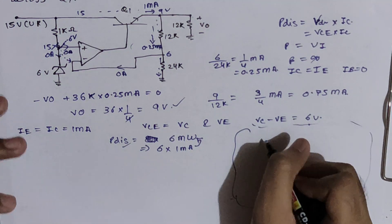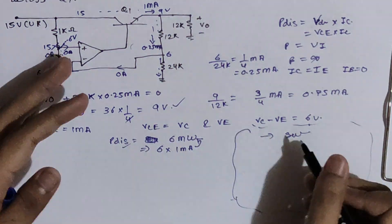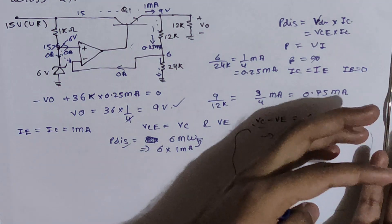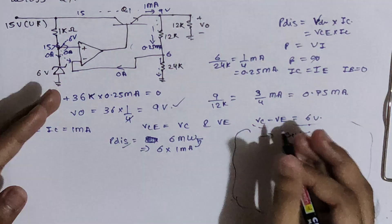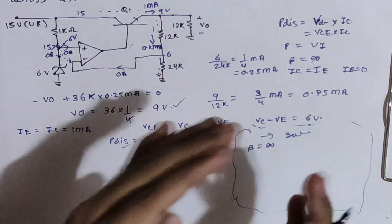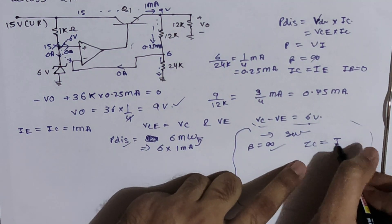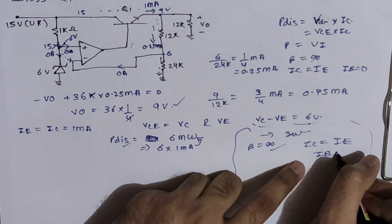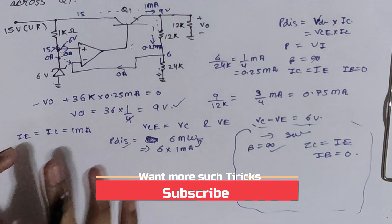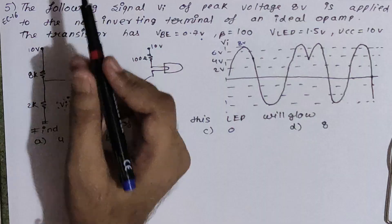So far in most problems, the transistor always acts as a switch. You now know the conditions for the transistor to be ON or OFF, and that when beta = infinity (or beta is not given), Ic = Ie and Ib = 0. With this knowledge alone, you can solve approximately 95% of op-amp and transistor-based problems.